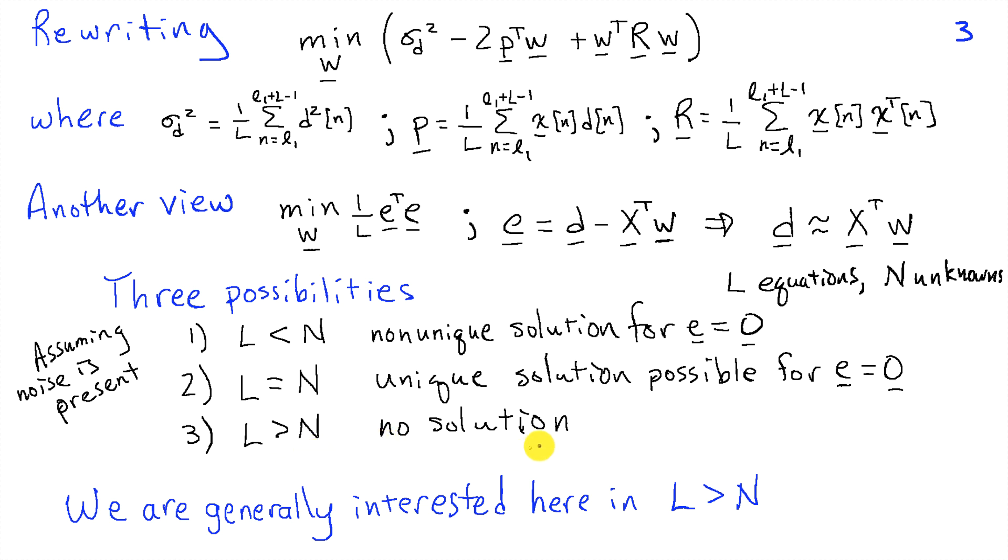And finally, if L is greater than N, then there is no solution in general. And so we're going to try to solve this problem in a least-square sense, that is to minimize the mean squared error. In the set of signal processing lectures that we're going to do in the immediate future, we're interested in L greater than N. One of the things we've shown here is that the filter design problem of finding an FIR filter that minimizes mean squared error is equivalent to solving a system of linear equations.